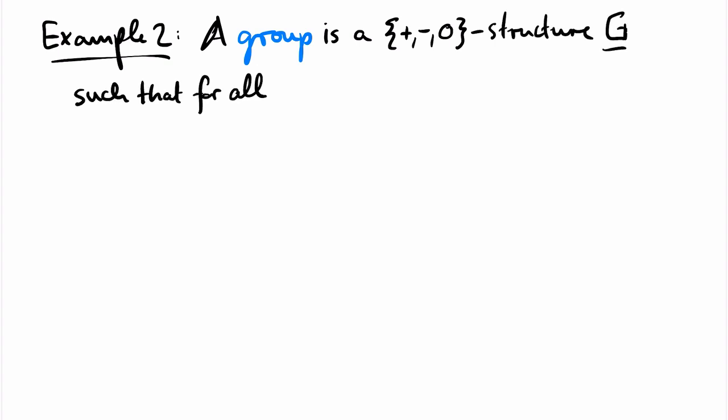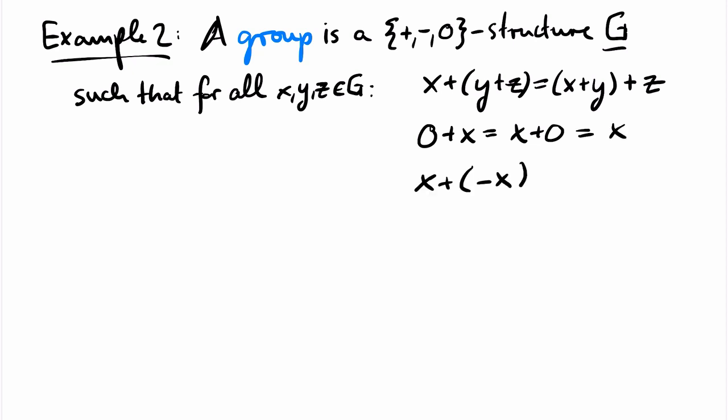Our second running example are groups. A group is a structure with the signature of groups that we have already seen, such that addition is associative, zero denotes the neutral element with respect to addition, and minus x denotes the additive inverse of x.